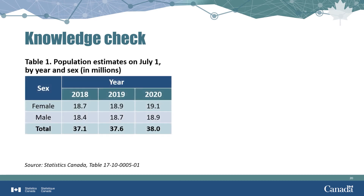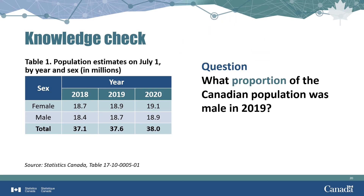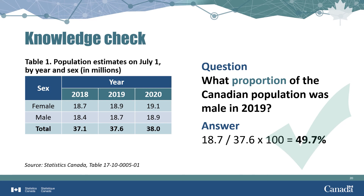Let's look at examples using real data. Table 1 presents demographic estimates by sex for 2018 and 2020. What proportion of the Canadian population was male in 2019? Divide the number of males — 18.7 million — by the total population of 37.6 million. The proportion of males in mid-2019 was 0.497, or 49.7%.